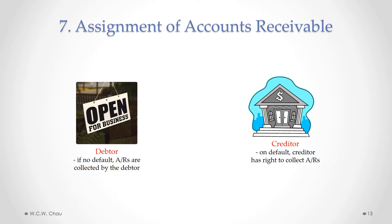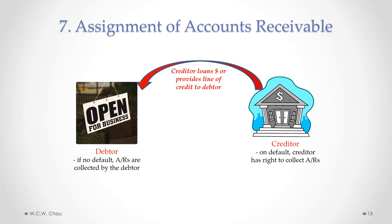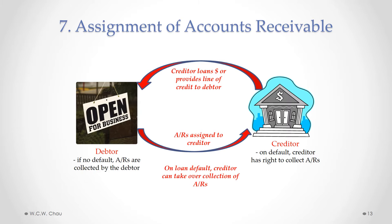Businesses that sell to customers on credit generate accounts receivables, which are considered assets that have value and can be used as collateral for loans or lines of credit. The security interest involving accounts receivables is called an assignment of accounts receivable. The creditor — usually a bank or financing company — provides a loan or line of credit secured by having the debtor's accounts receivables assigned over to the creditor. While the loan or line of credit remains in good standing with no default, it's business as usual and the debtor collects its ARs in the normal course of business. But if there is a default, the creditor takes over the collection of the ARs.